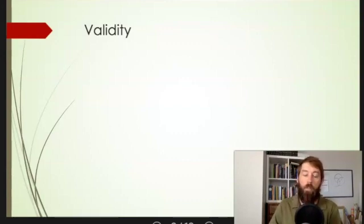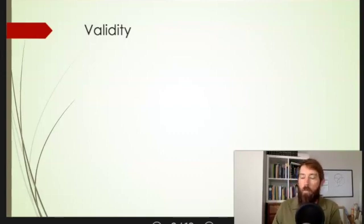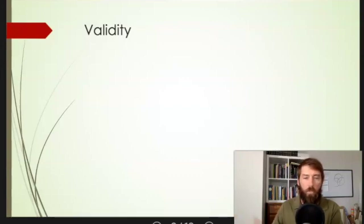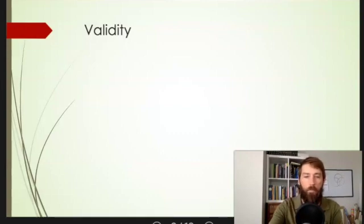Hello everybody, Matt here. In the last video we talked about the difference between deductive and inductive arguments. In this video we're going to talk about the standards for what makes for a good inferential claim. So remember, arguments are composed of the evidential claim that gives you the evidence and reasons, and the inferential claim, which is what the evidence or reasons are supposed to do — they're supposed to support the conclusion. Our first standard for what makes a good argument is validity.